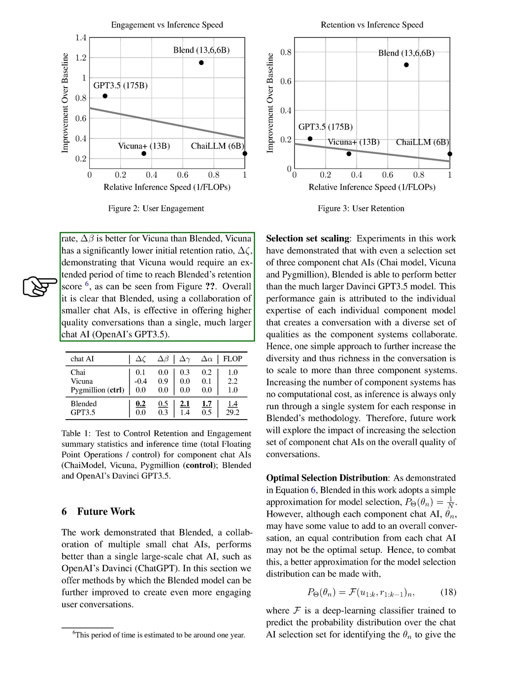Overall, the blended system, which combines smaller chat AIs, provided higher quality conversations than a single, larger chat AI like OpenAI's GPT-3.5. Section Summary. The paper discusses the importance of user engagement in chat AI systems and proposes a proxy metric, average time spent per visiting user, to measure user engagement. The authors conduct A-B tests on different chat AI systems and find that blending multiple smaller open-source systems can significantly improve user engagement and retention compared to a single large chat AI system. The results suggest that model collaboration is more effective than simply scaling up model parameters in designing engaging chat AI systems.